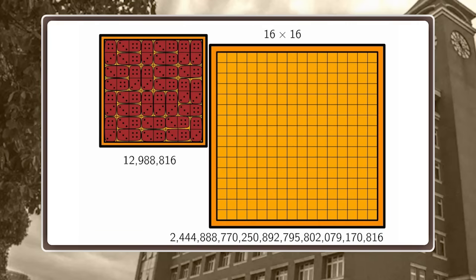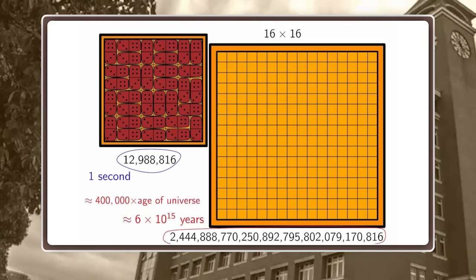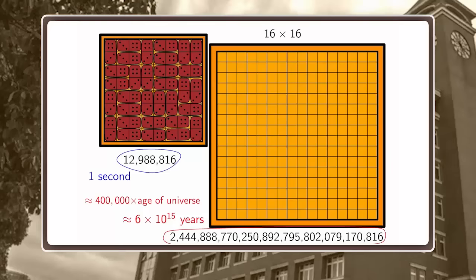There is a better way to feel how huge this number is. Suppose our computer needs one second to go through all tilings of the 8×8 chessboard. How long would the same computer program need to go through all tilings of 16×16? It would actually take 400,000 times the age of the universe. So even with very fast computers, this approach of just letting the computer try everything is completely hopeless. There is only one viable way: we have to start thinking.